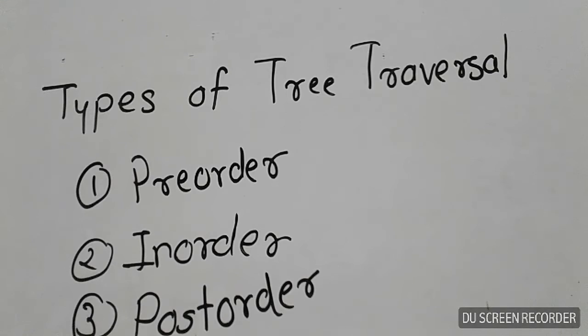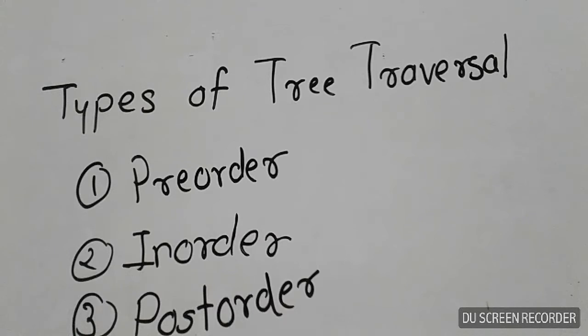Types of tree traversal. The first is pre-order traversal, the second is in-order traversal, and the third is post-order traversal. We will see them one by one.